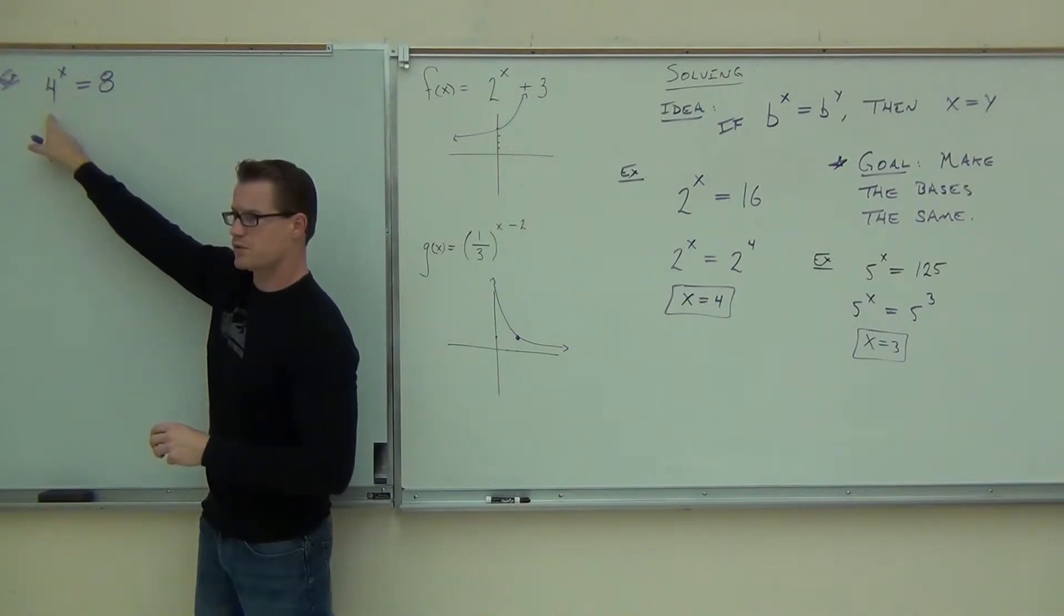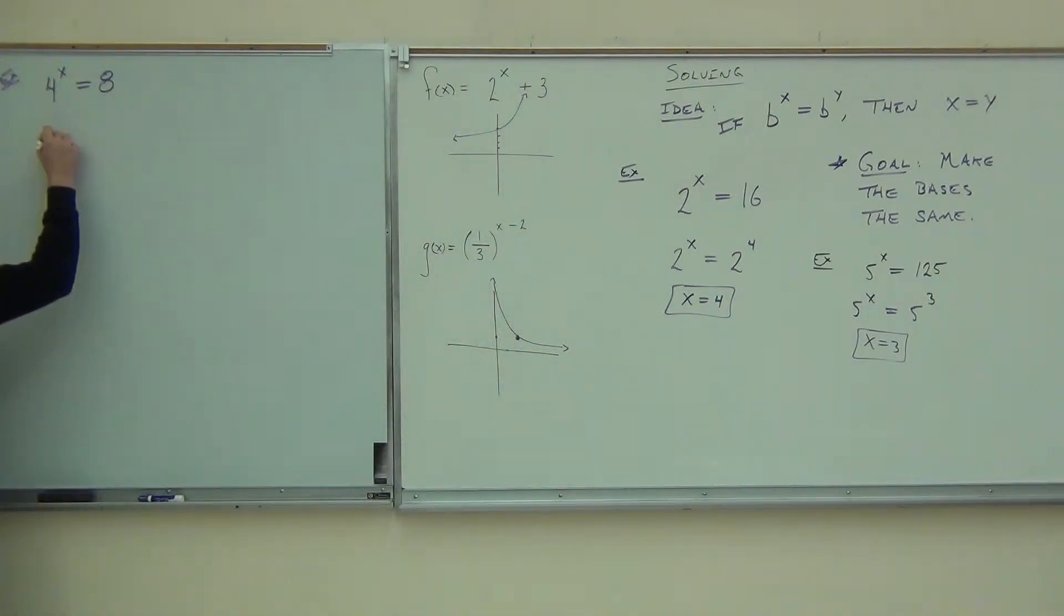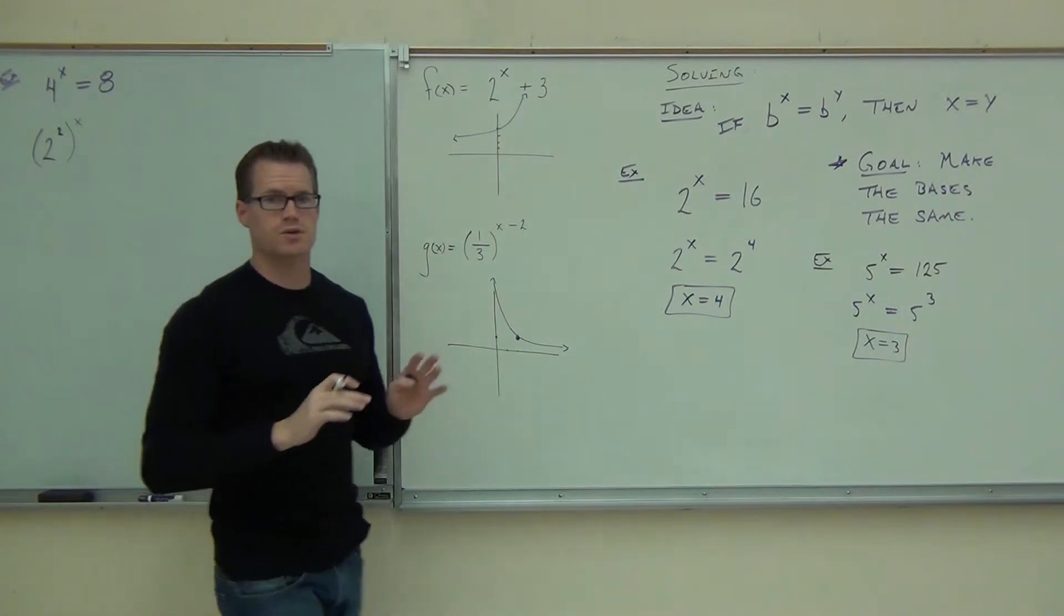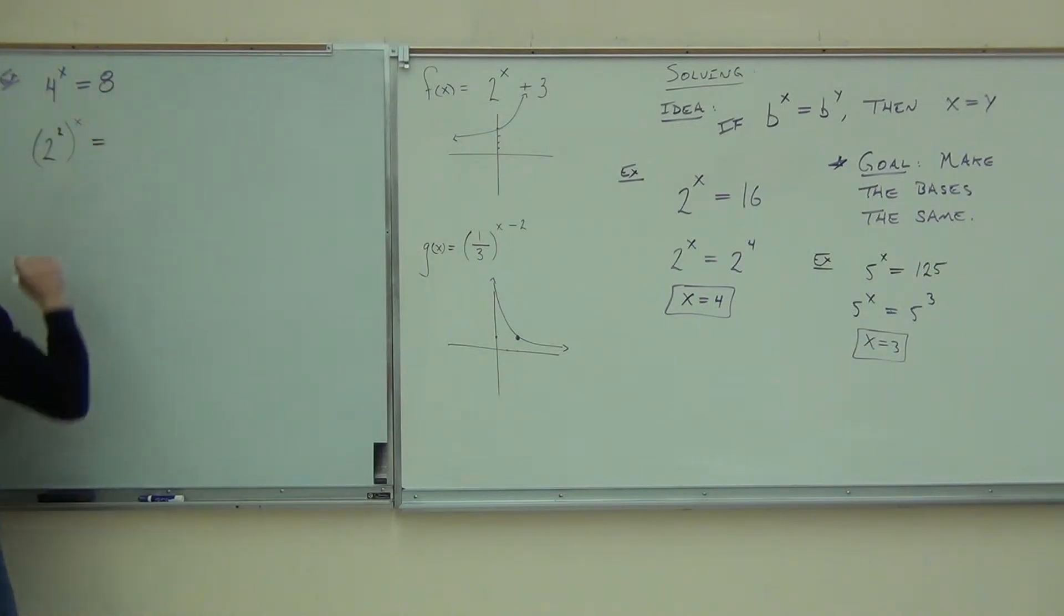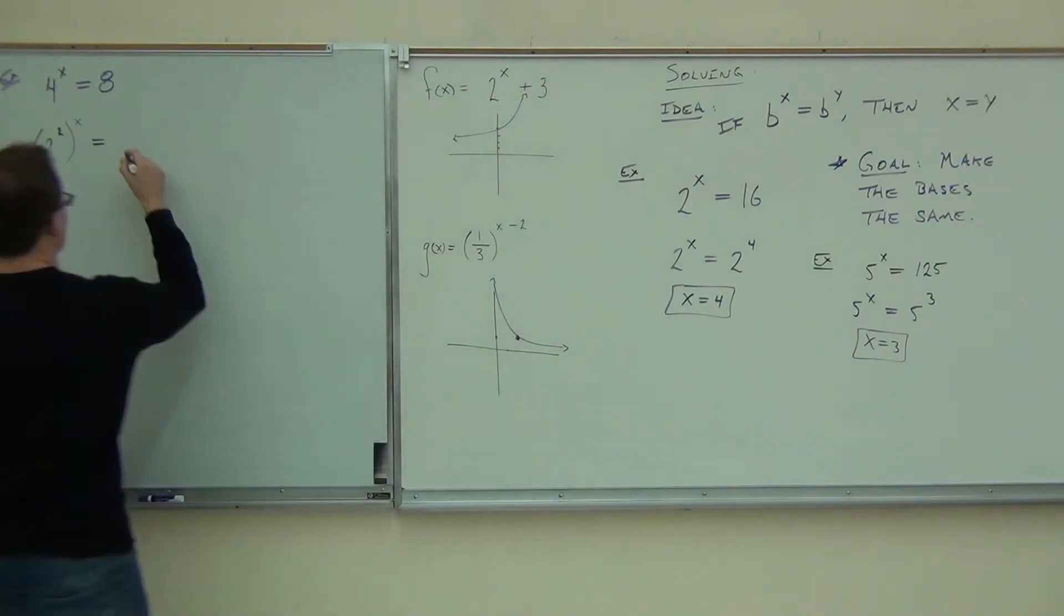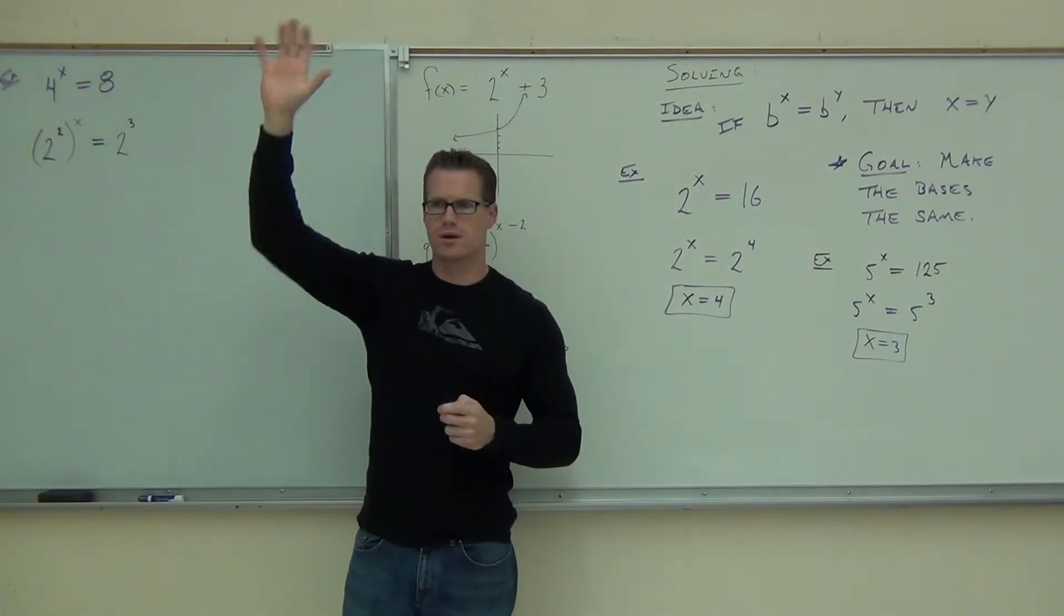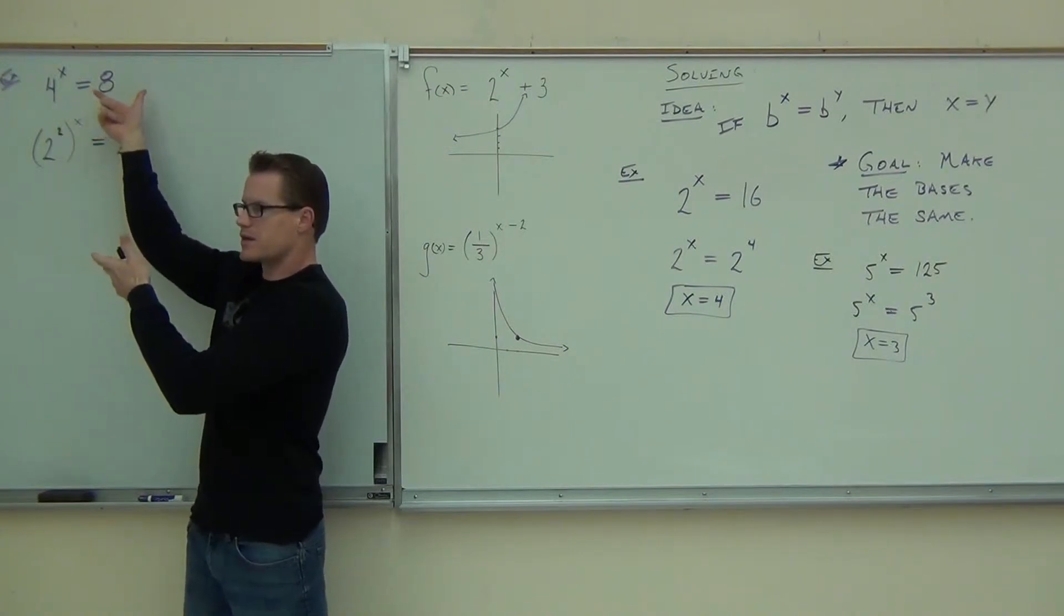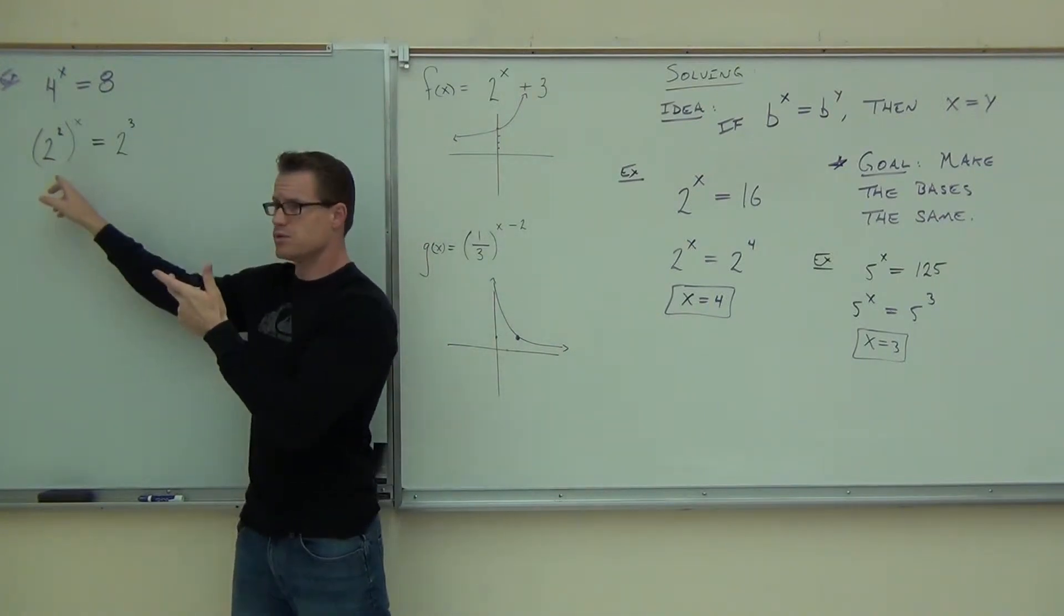Think about a smaller base. How could you write 4 as a power that this one could share as well, as a base that that one could share as well? You could write this 4 as what? 2 to the what power? Okay, so instead of thinking of this as 4 to the x, I can think of it as 2 squared to the x. Is that still the same thing as 4 to the x? Yep. So you're still looking for a common base, only this time you've got to look for it within those numbers. How about 8? Can you write that as 2 to some number? 2 to the 3rd.